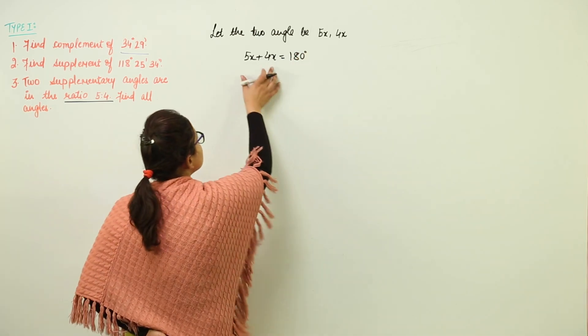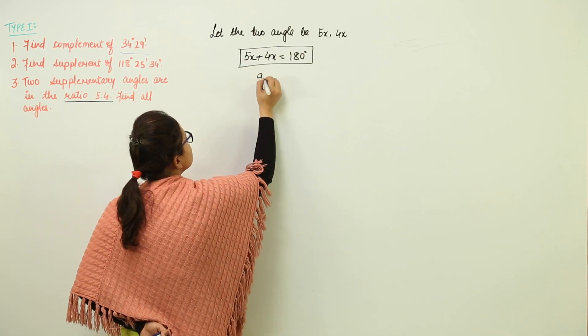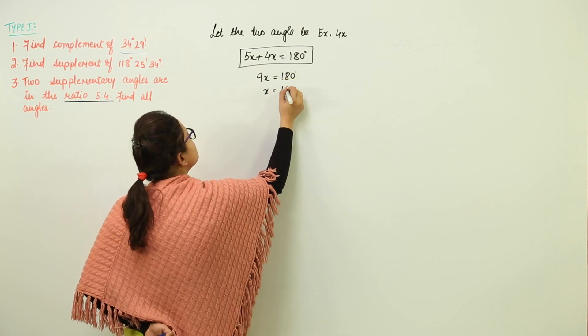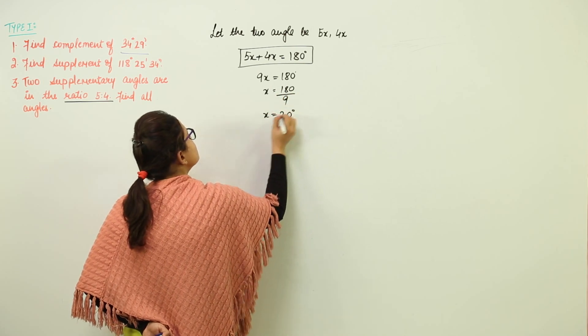This forms the equation that we have to solve. So 5 plus 4 becomes 9x equal to 180 degrees, and we get x equal to 180 over 9, giving us 20 degrees.